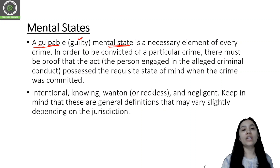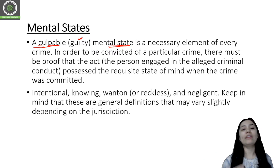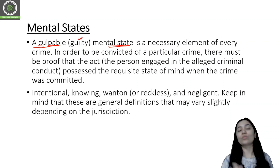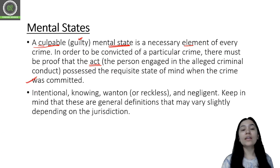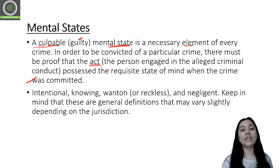If I am not having a guilty mindset, then my conviction will proceed differently. In law we study culpable homicide and non-culpable homicide — culpable means guilty. In order to be convicted of a particular crime, there must be proof of the act, and the person engaged in alleged criminal conduct must possess the requisite state of mind when the crime was committed — meaning the person was mentally completely fine and was expecting that type of result.